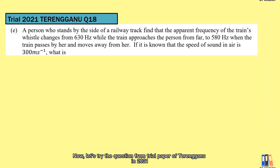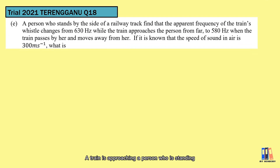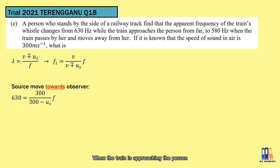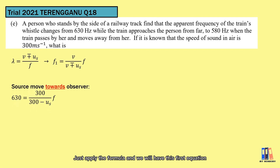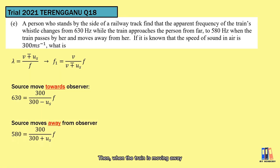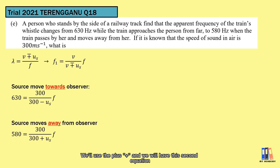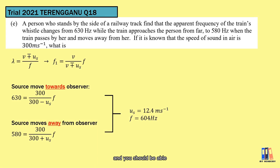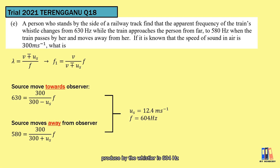Let's try a question from the trial paper of Terengganu 2021. A train is approaching a stationary person — this is the first case of the Doppler effect. When the train is approaching, the apparent frequency is 630 Hz. Applying the formula with the minus sign (shorter wavelength), we get the first equation. When the train is moving away, the apparent frequency drops to 580 Hz, giving the second equation with a plus sign. Solving these two equations simultaneously, the speed of the train is 12.4 m/s and the frequency of the whistle is 604 Hz.